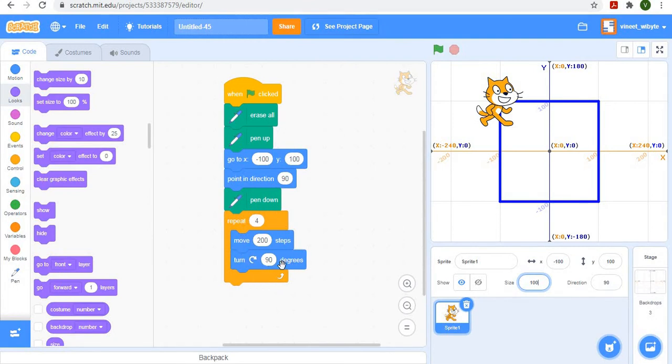and we are turning it by 90 degrees because 360 by four is 90. 200 controls how long each side is. So let's just try this out. So for example,